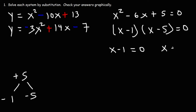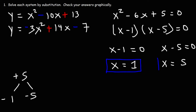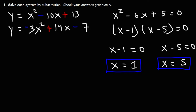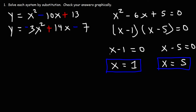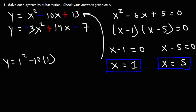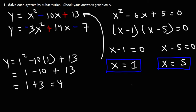Setting each factor equal to zero: adding 1 to both sides gives x equals 1, and adding 5 to both sides gives x equals 5. To get the corresponding y values, we plug into the first equation since it looks simpler. For x equals 1: y equals 1 squared minus 10 times 1 plus 13, which is 1 minus 10 plus 13, giving y equals 4. So the first ordered pair is (1, 4).